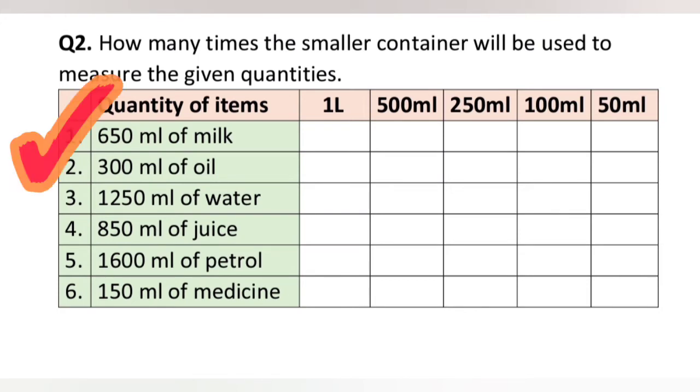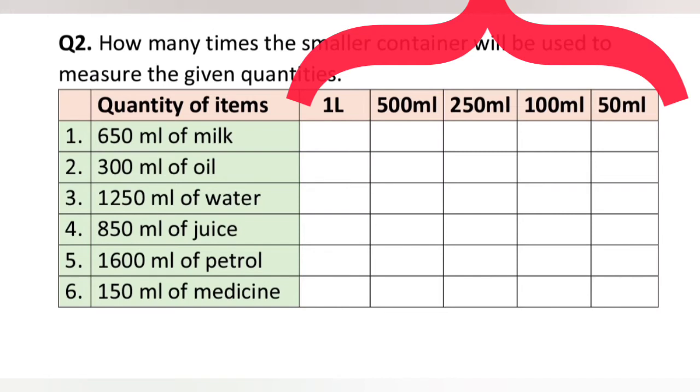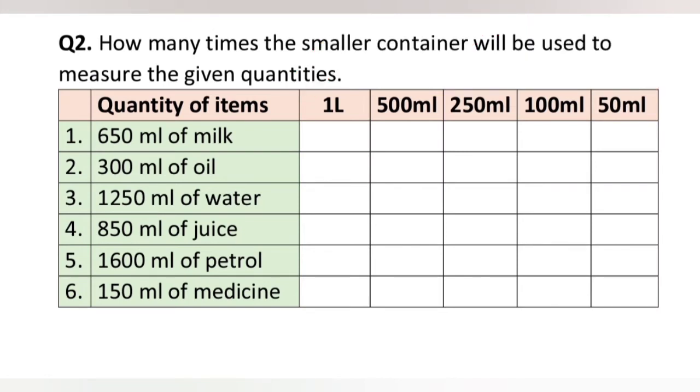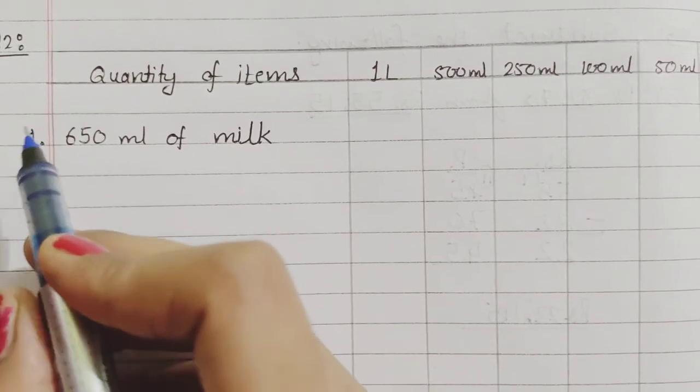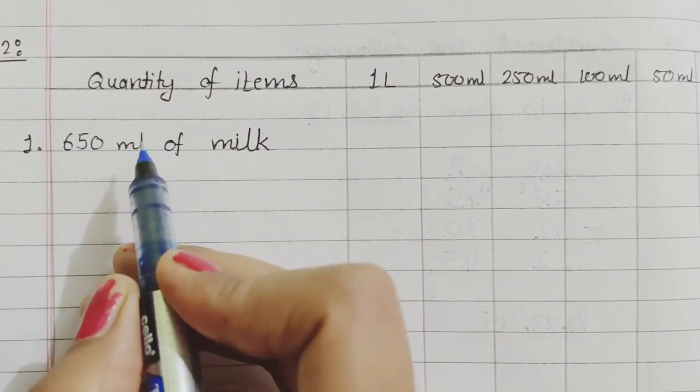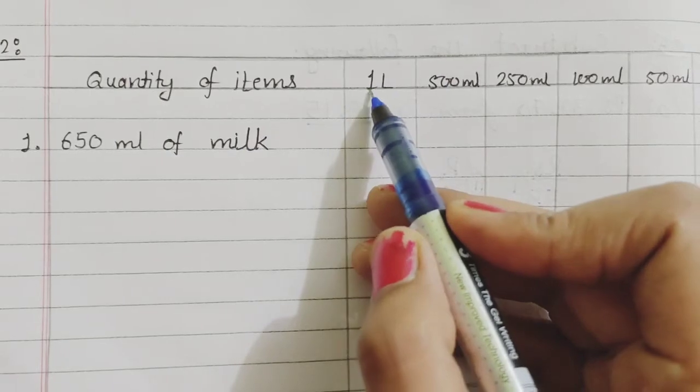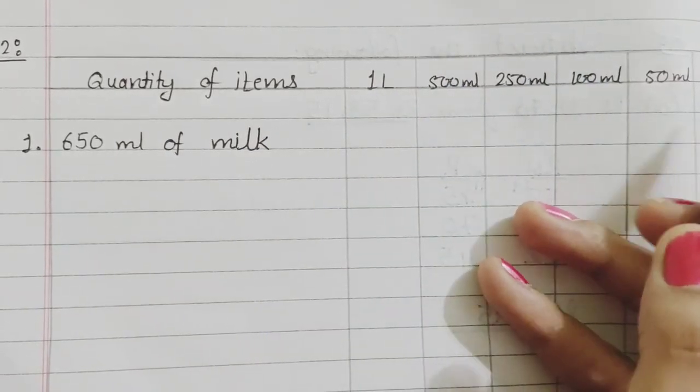Question number 2 is: how many times will the smaller container be used to measure the given quantities? In this table, you can see the quantity of items, then the measuring containers like a container of 1 litre, 500 ml, 250 ml, 100 ml, and 50 ml. In this question, you have to mark the number of times we will use these containers to measure these quantities of items. In this question, here we have 650 ml of milk and the containers we have are these ones.